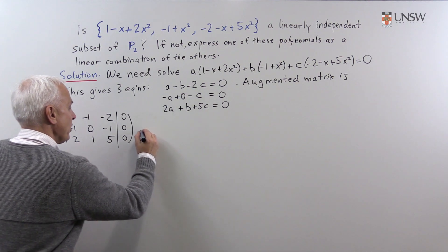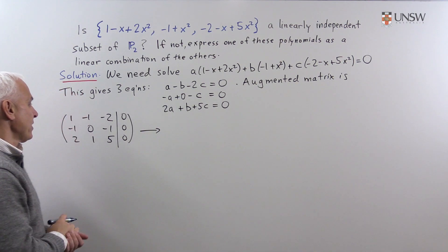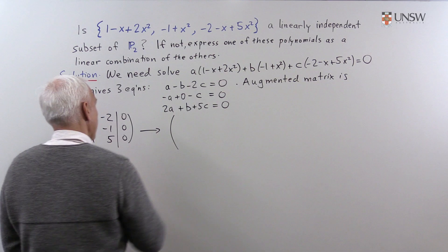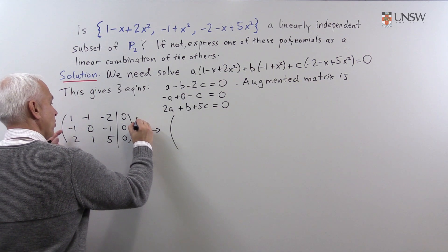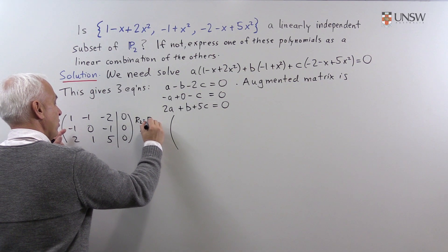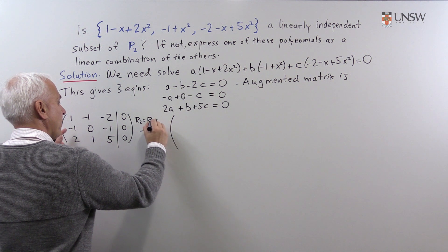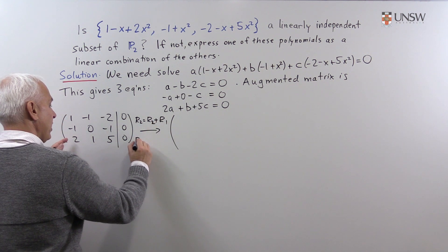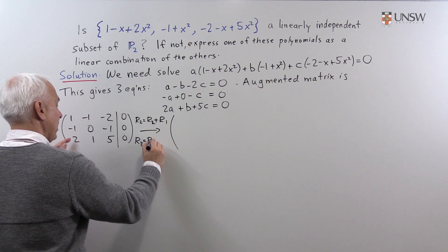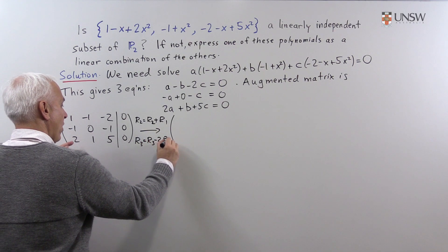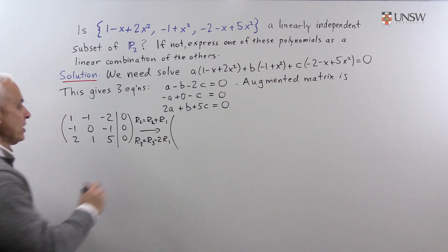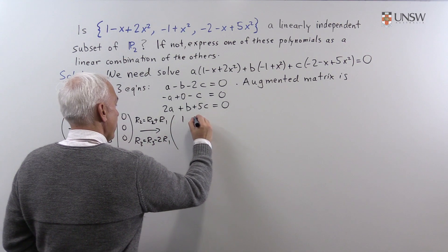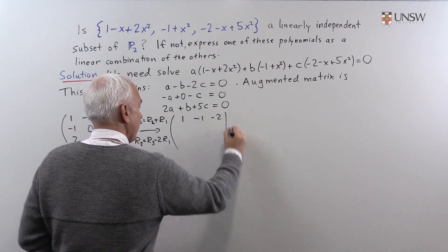All right, let's row reduce. So, let's take row 2 will be row 2 plus row 1, and row 3 will be row 3 minus 2 times row 1. So, we'll leave the first row where it is, 1, -1, -2, 0.